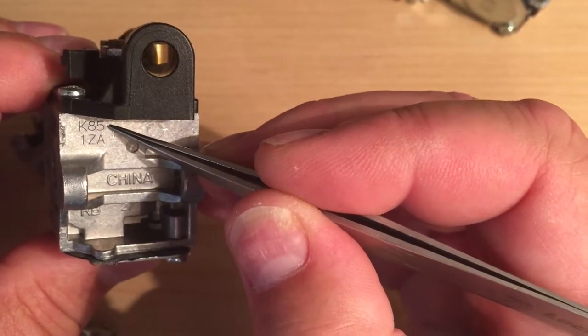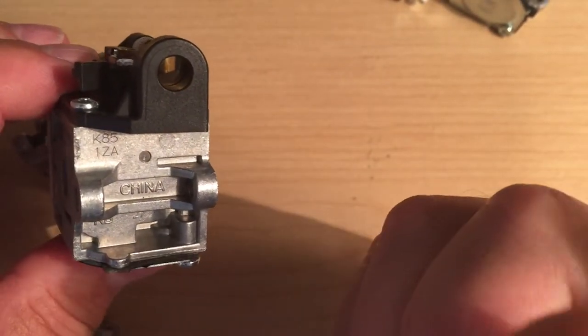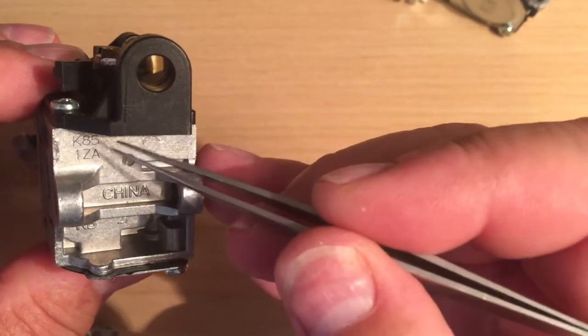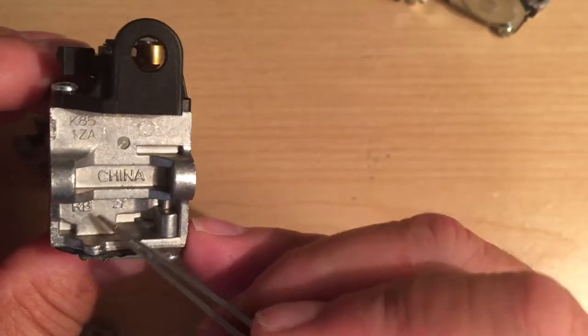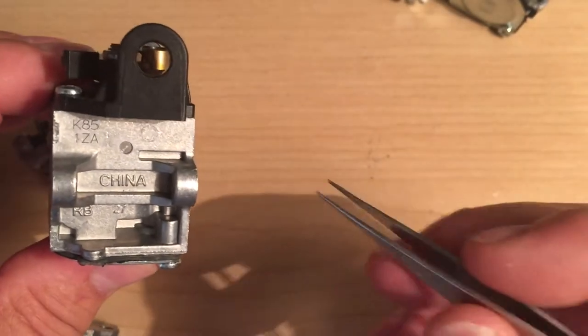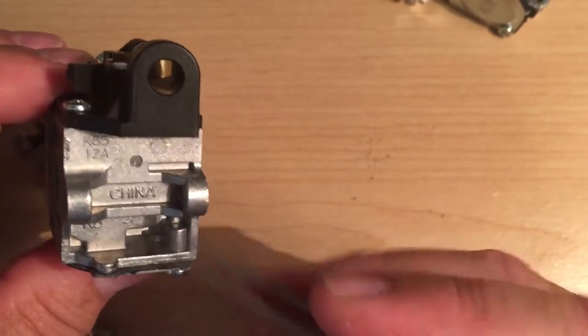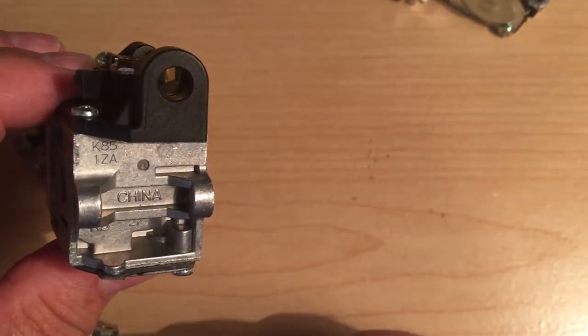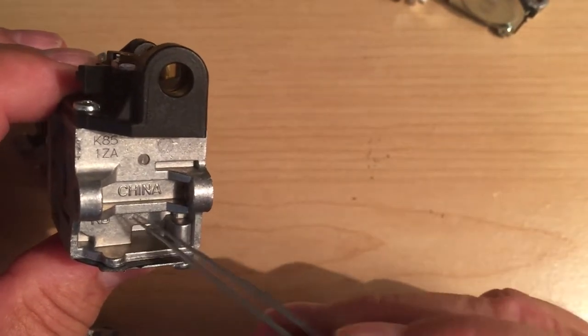For this particular one, it's a K85 1ZA. The 1ZA again is the date code, irrelevant. The K85 is the only thing you need. Some people misinterpret this as being an RB27. That would be wrong. It is an RB K85, but the RB27 is not the model number. The model number again will never be cast into the carburetor.